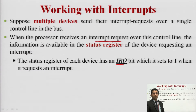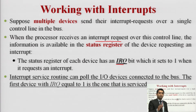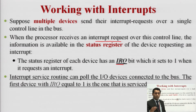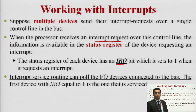This information is available in the status register. If the status register value is 1, it means a particular device is requesting or raising a particular interrupt. The interrupt service routine can poll the IO devices — there are multiple devices, and permission is given to one of them. Out of five devices, priority is given to device number two.